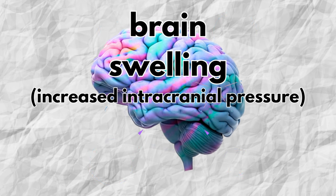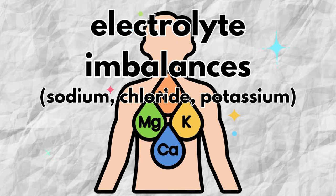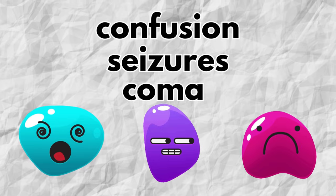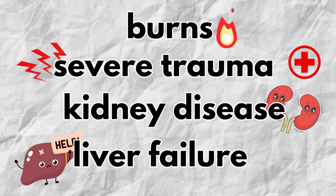Brain swelling or increased intracranial pressure is a key concern, and it's crucial to monitor patients for signs of cerebral edema. Hypotonic solutions don't contain sufficient concentrations of electrolytes like sodium, chloride, and potassium, so prolonged use can result in imbalances — particularly hyponatremia — which can cause confusion, seizures, and coma. These solutions are generally not appropriate for patients at increased risk for fluid and electrolyte imbalances, such as those with burns, severe trauma, certain kidney disorders, or liver failure.